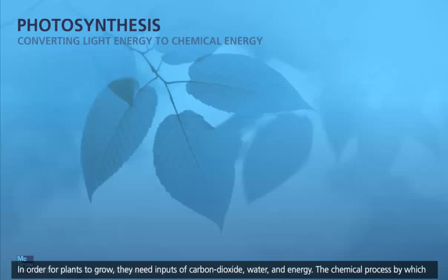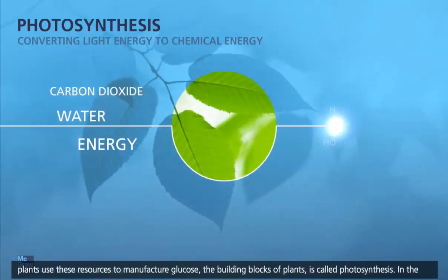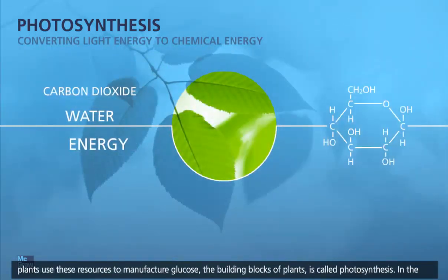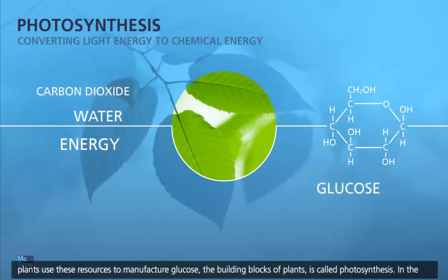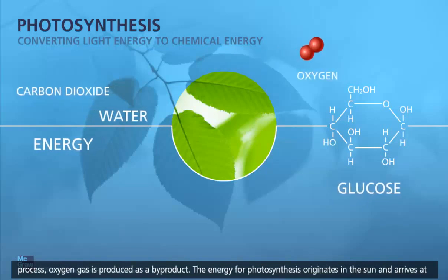In order for plants to grow, they need inputs of carbon dioxide, water, and energy. The chemical process by which plants use these resources to manufacture glucose, the building blocks of plants, is called photosynthesis. In the process, oxygen gas is produced as a byproduct.